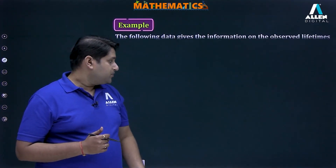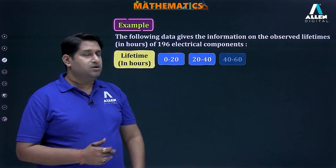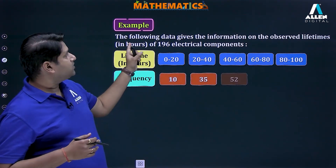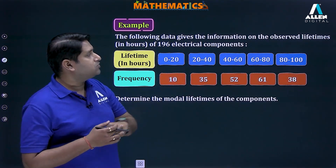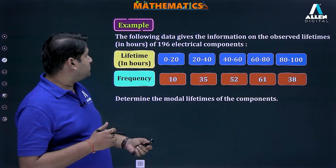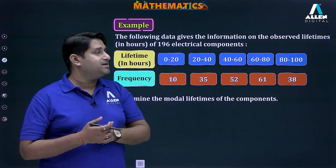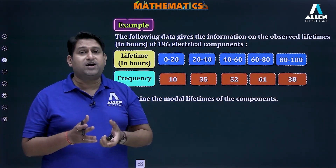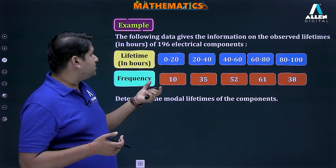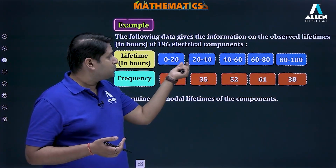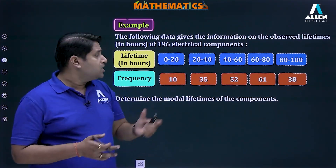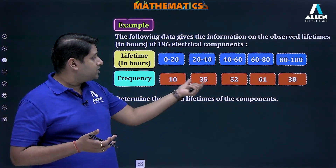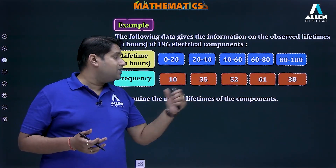Now let us look at an example. The following data gives information on the observed lifetimes in hours of 196 electrical components. The data is given in class intervals — 0 to 20, 20 to 40, and so on — with the corresponding frequencies of electrical components.